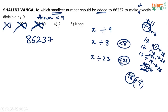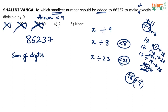This logic helps us eliminate three options. Now how do we check divisibility by 9? The rule is: the sum of the digits must be divisible by 9. There is a proof behind that, but we are only interested in the method. So let's check: 8+6=14, +2=16, +3=19, +7=26. The sum of the digits of 86237 is 26. Is 26 divisible by 9? No. So this number is not divisible by 9.